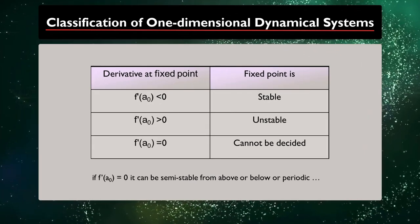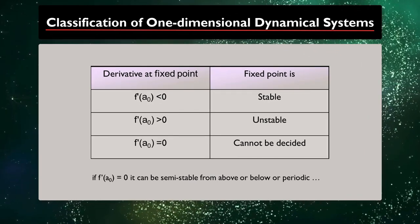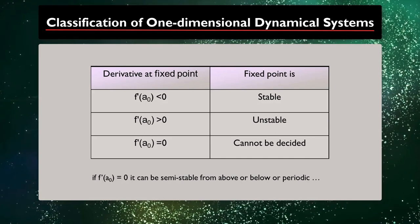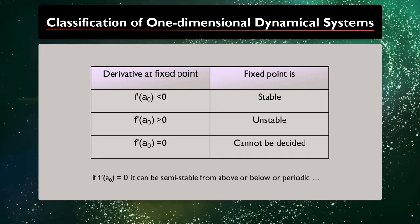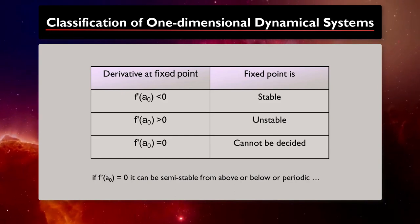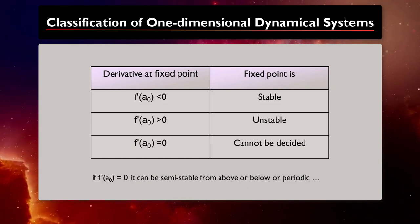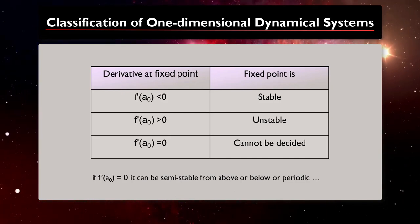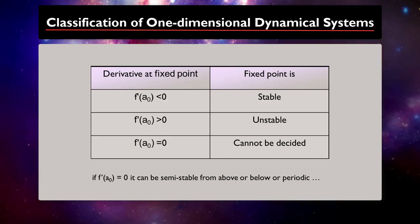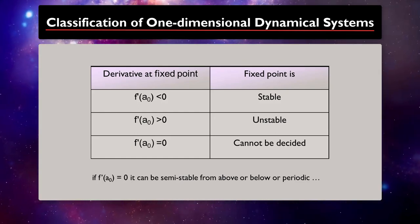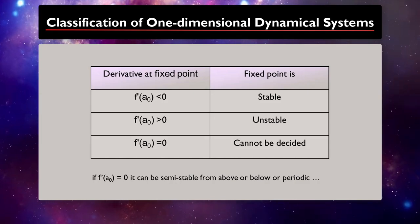There are general rules regarding the stability of a one-dimensional dynamical system, which we can use to determine if a fixed point is stable or not. For every fixed point, if the derivative at this point is positive, then it is unstable. If it is negative, it is stable and if it equals zero, we need to use higher derivatives or other methods and the point can be semi-stable from above or below.